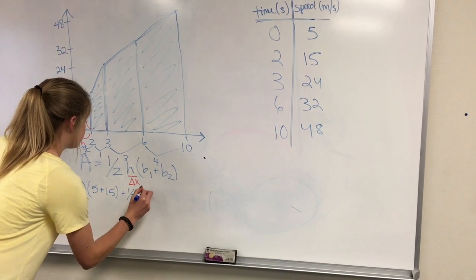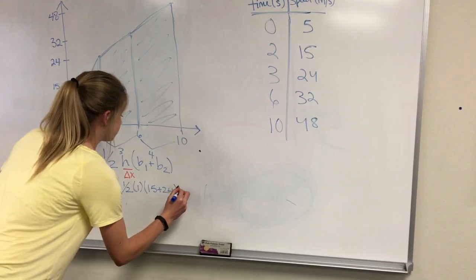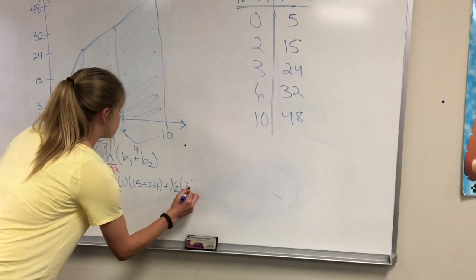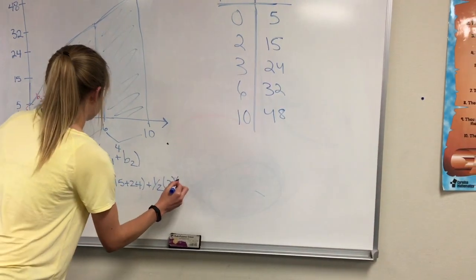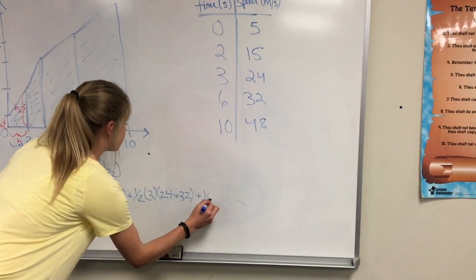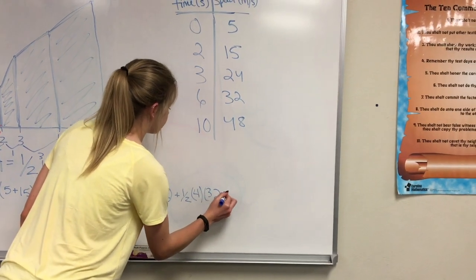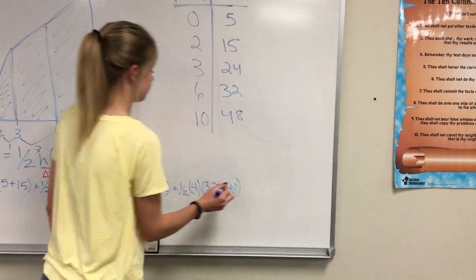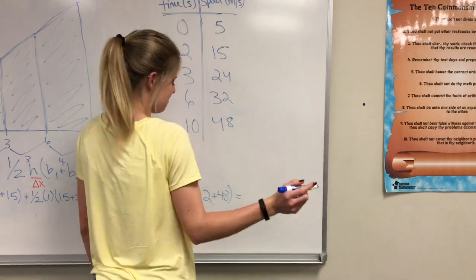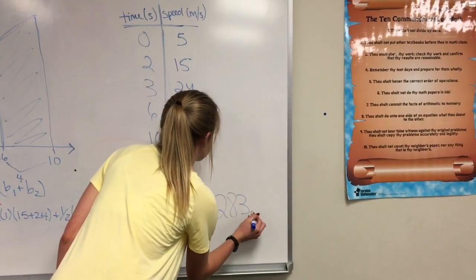This means that, in the final equation, you will use both of the y values that correspond with the two x values, unlike with LRAM and RRAM when you either use the right or the left y value. Using this information, you can plug in the values of h, b1, and b2 for each trapezoid, and by finding the sum of these values, you are able to generate a more accurate approximation of the area, which in this case is approximately 283.5 meters traveled.